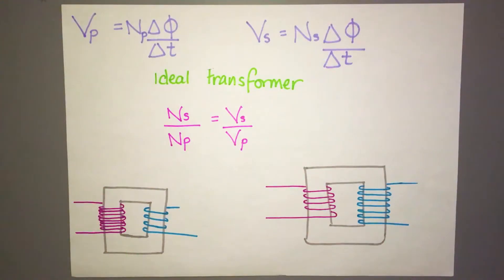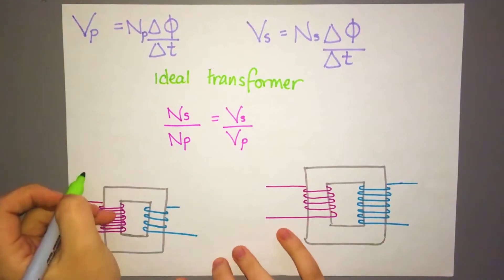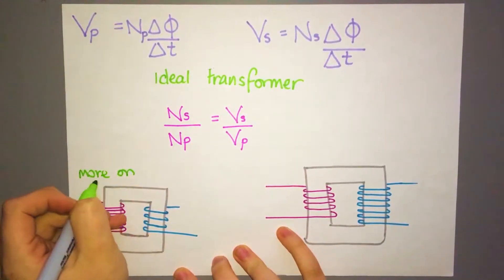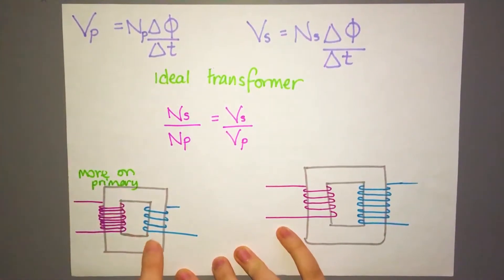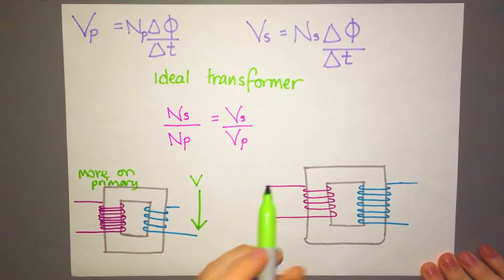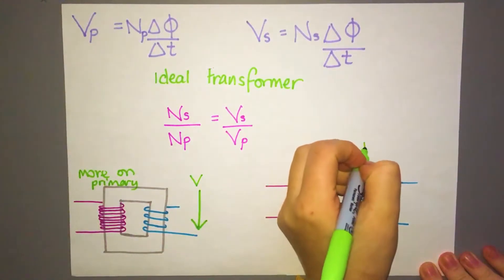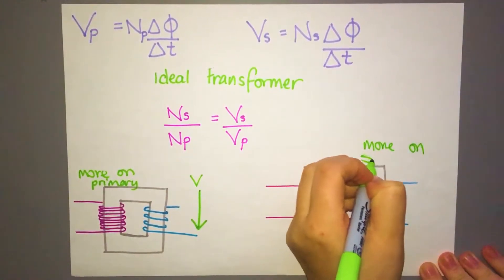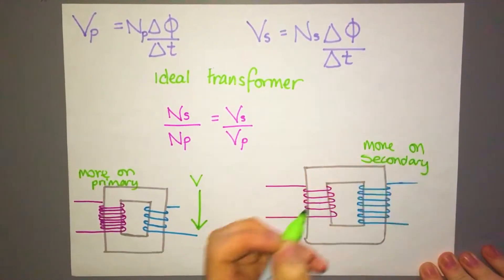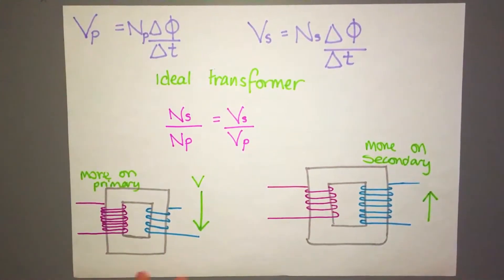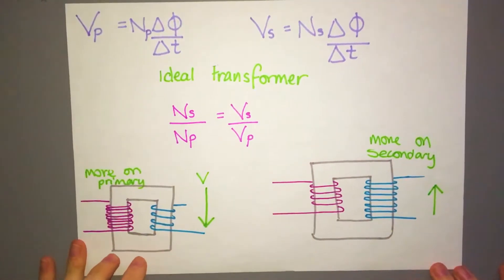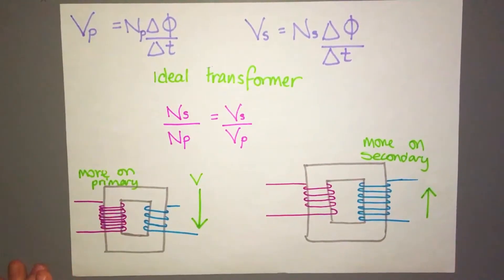Now if we're considering this, if we've got more turns on our primary side then on our secondary side, what's going to happen there is our voltage is going to go down on the secondary side. If we have more turns on the secondary side then our voltage is going to go up. So this is why we're doing it. I'm going to go on to this when we're going to be talking about the national grid, but just be aware of that: if you have more turns on your secondary side it's going to go up, if you've got less turns on your secondary side your voltage is going to go down.